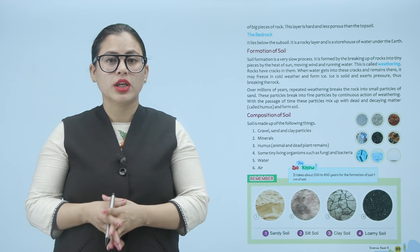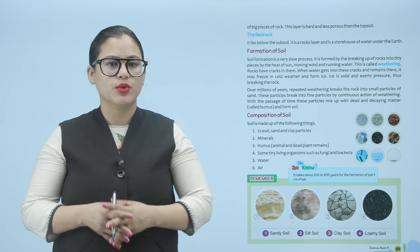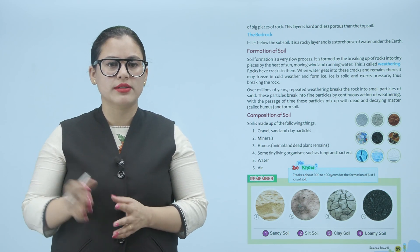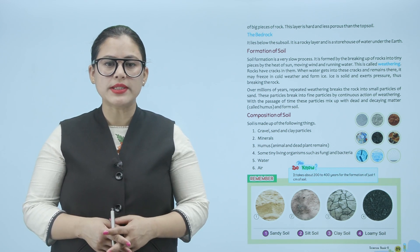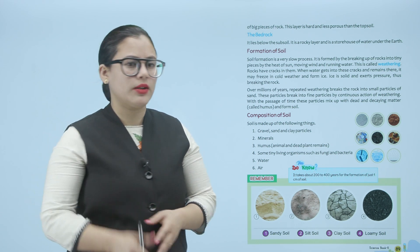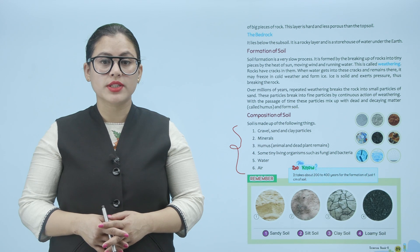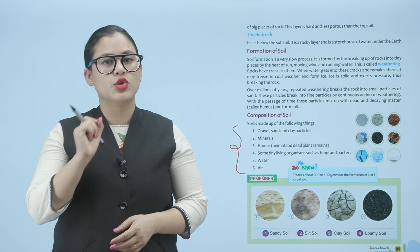Kai bar kya hota hai ki cold weather mein woh freeze ho jaega. Ab ice banne ka toh ice solid hai, toh pressure exert karta hai, toh isse ki jo rock breakdown ho jaati hai. Millions of years tak ki jo repetition hai hota rehta hai, weathering hota rehta hai. Soil aapke bohot saari cheezon se bani hai: gravel, sand, clay particles, minerals, humus, animals, dead plant remains, some tiny living organisms such as fungi and bacteria, water, and air. Aapko malum hai soil ki sirf ek centimeter layer ko banne mein kam se kam do sau se chaar sau saal lagte hain.